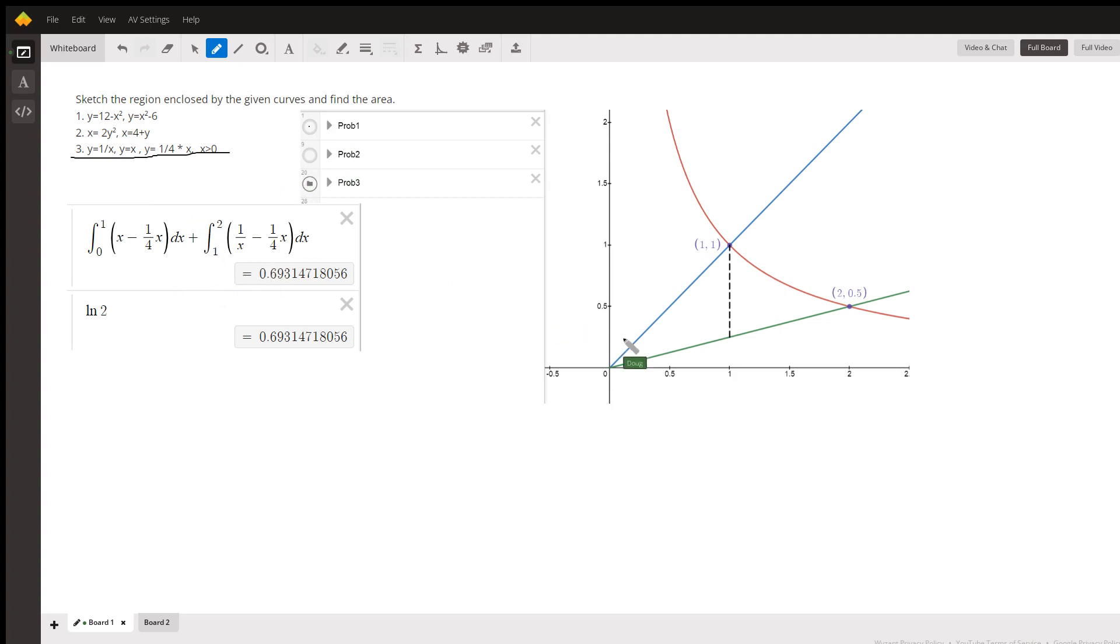For problem number three, here's the graph. y equals 1/x is the reciprocal function. We're only looking at the right branch where x is greater than zero. The blue line is the graph of y equals x, and this green line is y equals (1/4)x.